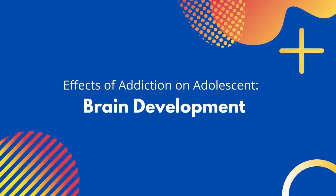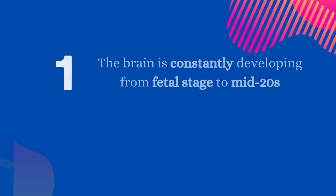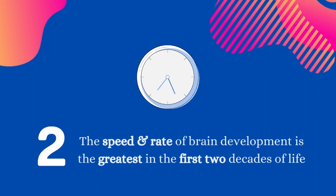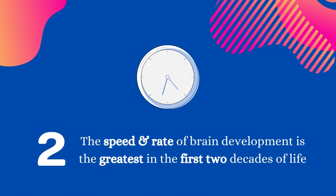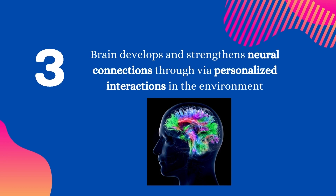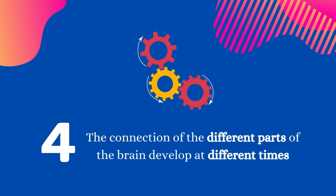Now let's focus on the effects of addiction on adolescent brain development. The brain is constantly developing from the fetal stage in the mother's womb into your mid-20s. While the brain doesn't stop developing after your mid-20s, the speed and rate of brain development is greatest in the first two decades of life and decreases later. During adolescence, the brain develops and strengthens neural connections through interactions in the environment. Neurons send electrical and chemical signals with important information from one area of your brain to another, and greater environmental interactions increase the chances of learning from mistakes that help form neural connections.